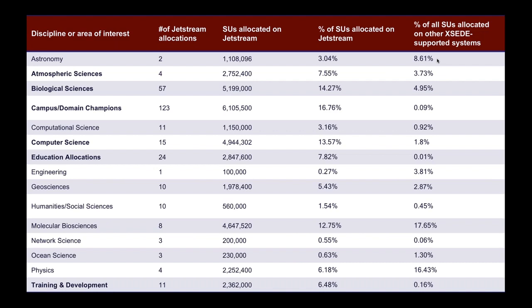Looking at how Jetstream is being used: this is a snapshot from a couple months ago. Biological sciences are our biggest area — we have a lot of bioinformaticians, and the biggest reason is their run times tend to be longer than allowed on traditional shared supercomputers. We have a lot of computer scientists, which is a natural fit. I'm proud that we have a lot of education allocations, much higher than the rest of XSEDE. Atmospheric sciences is really growing for us, and earth sciences and geosciences are up-and-coming. Ocean sciences is still a small area, but we're hoping to improve that.